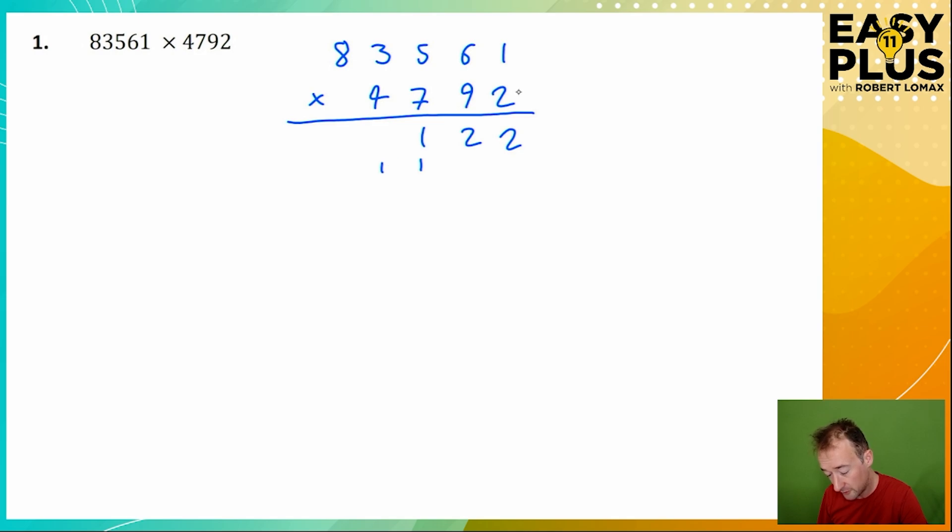2 times 3 is 6, we've got the carried one which makes it 7. 2 times 8 is 16, and we can put the 1 here in the same row because there's nothing else to do with that space. We've dealt with the 2, we can cross it out.